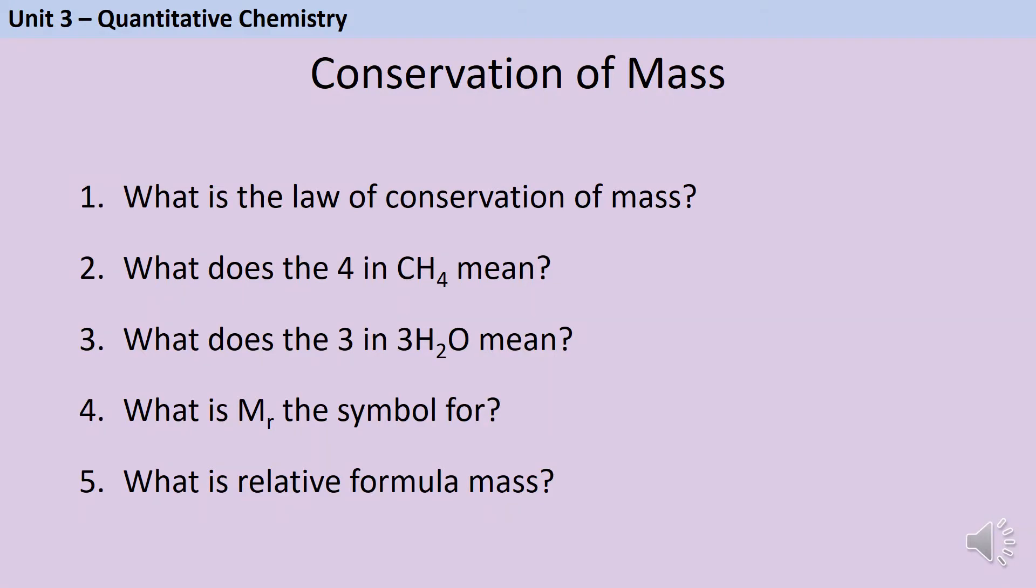The law of conservation of mass tells us that no atoms can be created or destroyed during a chemical reaction, and this means that the mass of the reactants and the mass of the products must be exactly the same as each other, and this is what allows us to balance symbol equations.